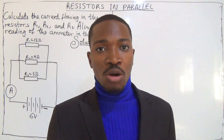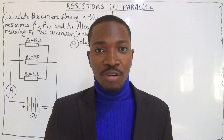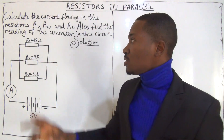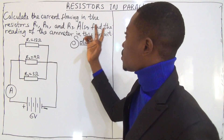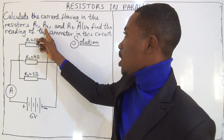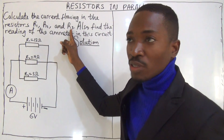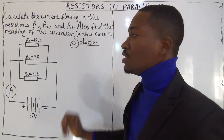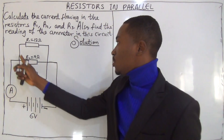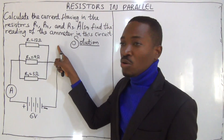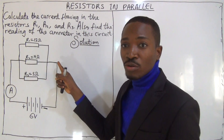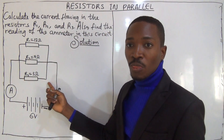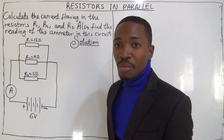Welcome. I will be solving another problem involving resistors in parallel. Look at this question: calculate the current flowing in the resistors R1, R2, and R3. Also, find the reading of the ammeter in this circuit.